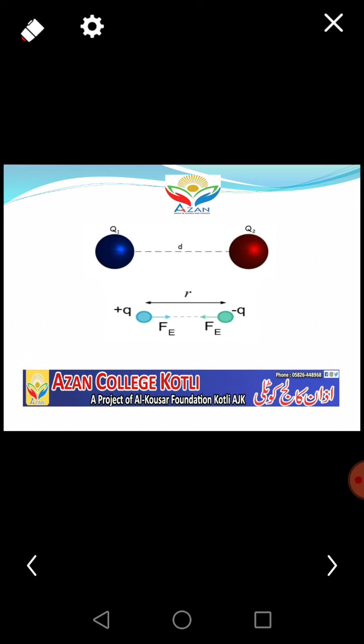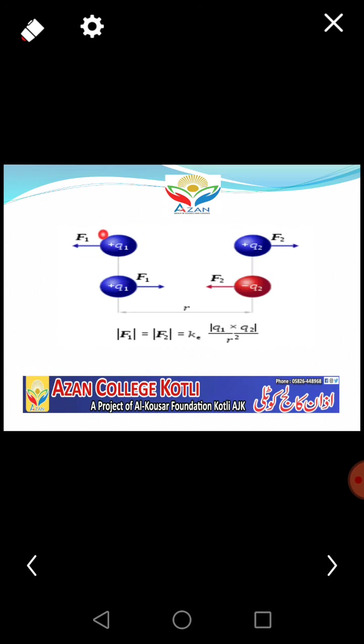If we have two charges, q1 and q2, if their magnitudes are equal and they are unlike charges, then they will show force of attraction, that is electrostatic force of attraction. If there are two like charges, then force is as shown. If there are two unlike charges, then you can see the force.